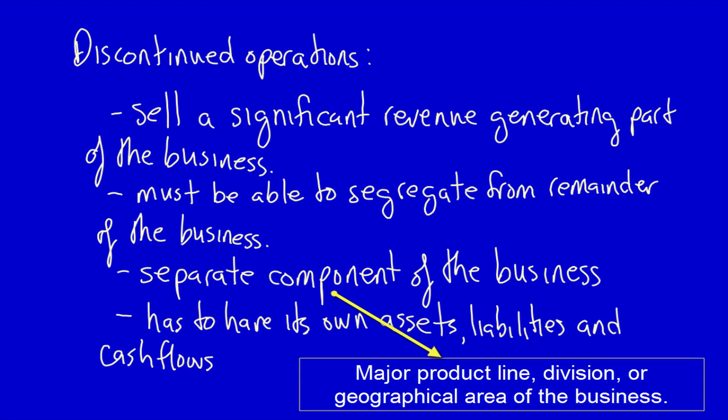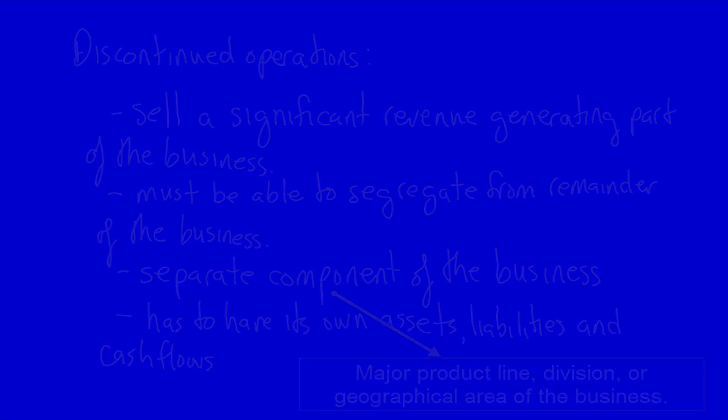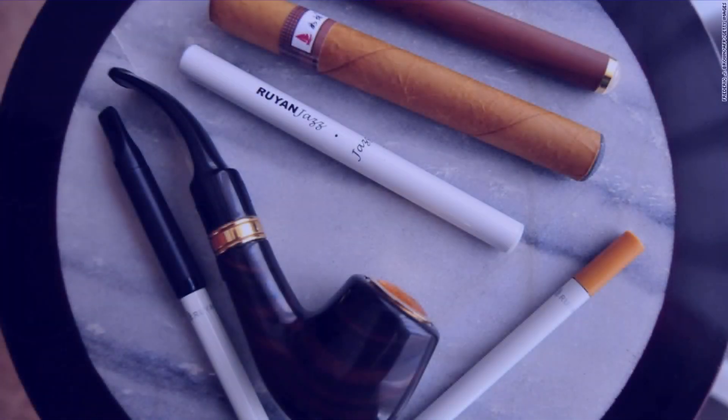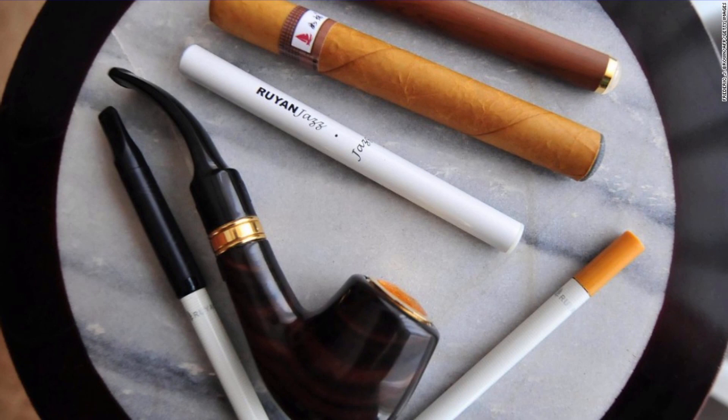Finally, a separate component of the business could be a division. For instance, a tobacco company that produces both cigarettes and cigars — the cigars would be a separate component of the business, as long as it had its own assets, liabilities, and cash flows.